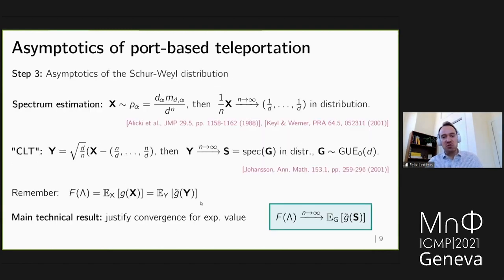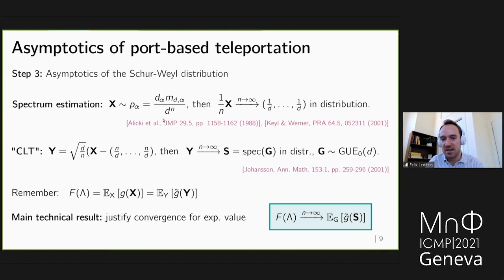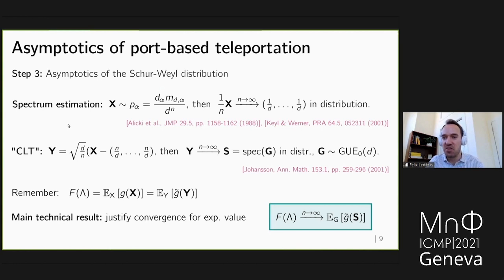The final step is determining the asymptotics of the Schur-Weyl distribution. A result from spectrum estimation tells us that if X is a random variable taking values in Young diagrams under the Schur-Weyl distribution, normalized appropriately, then in the limit N→∞ it converges in distribution to the flat spectrum. This is a law of large numbers; the corresponding central limit theorem, proved by Johansson, says the centered and normalized random variable Y converges to the spectrum of a traceless GUE matrix.